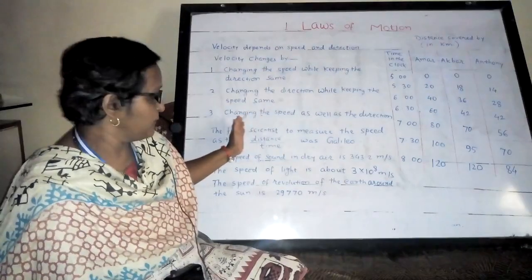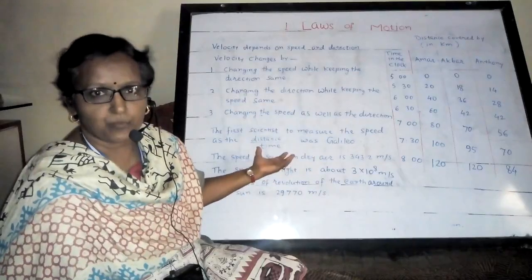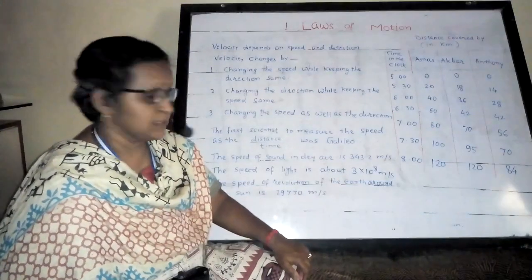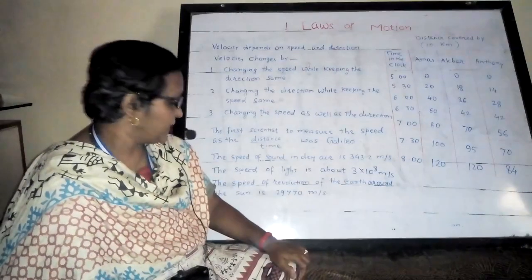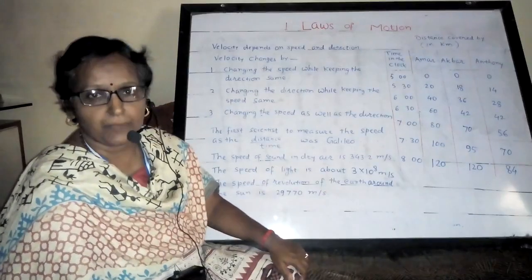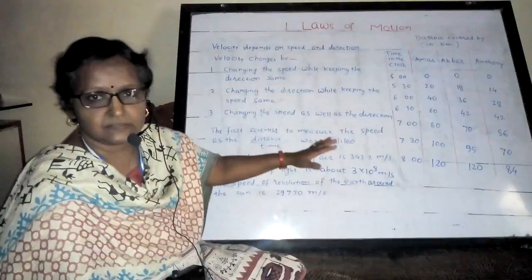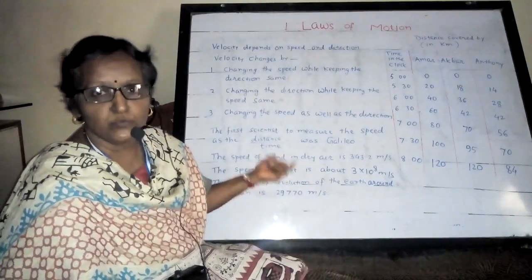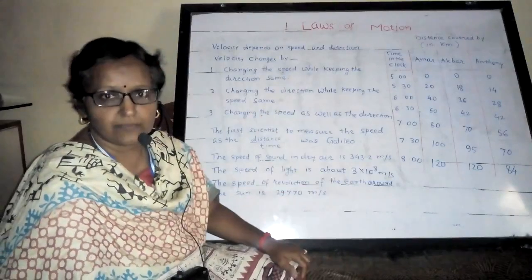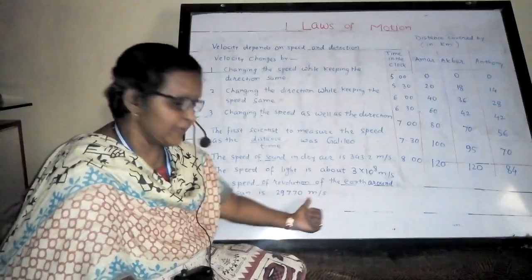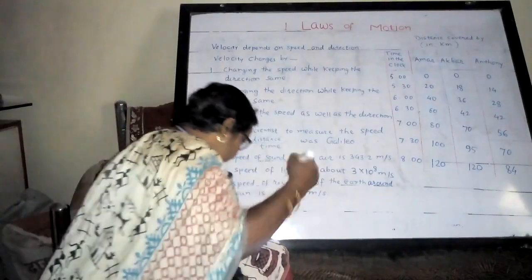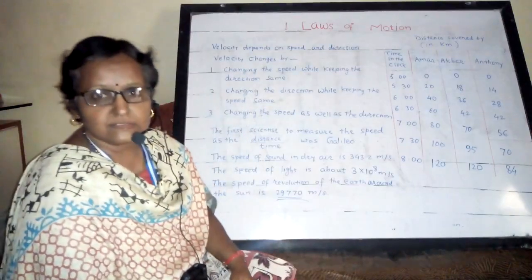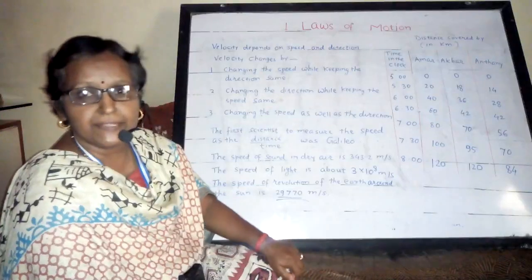This speed concept was first given by Galileo — speed is distance upon time. The speed of sound in dry air is 343.2 meters per second, and the speed of light is about 3 × 10⁸ meters per second. These can be asked in fill-in-the-blank questions. Also, the Earth revolves around the sun at 29,770 meters per second — underline this as it can be asked.